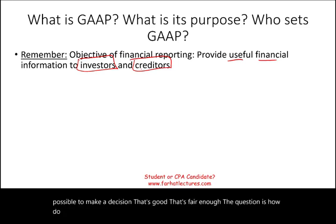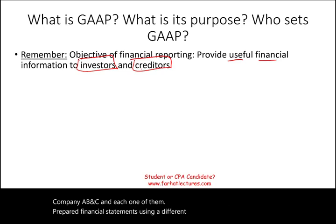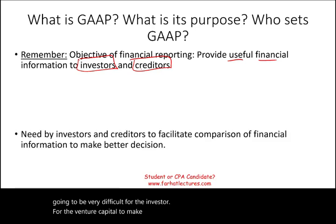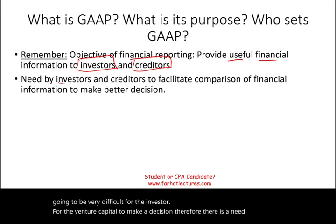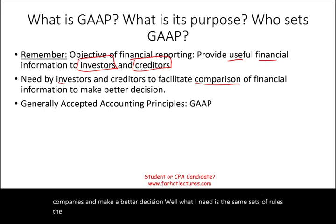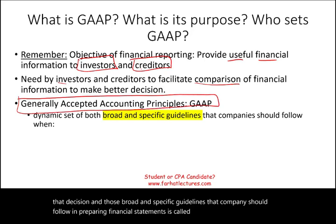The question is how do we provide this information? Let's assume we have three companies — A, B, and C — and each one prepares their financial statements using different sets of accounting rules. It's going to be very difficult for investors or venture capital to make a decision. Therefore, there's a need to facilitate comparisons. What we need is the same set of broad and specific guidelines to help make that decision. Those broad and specific guidelines that companies should follow in preparing financial statements is called GAAP — Generally Accepted Accounting Principles.